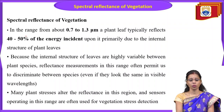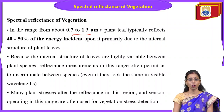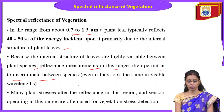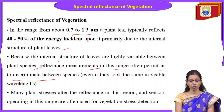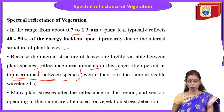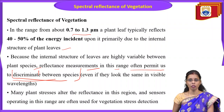In the range from about 0.7 to 1.3 micrometers, a plant leaf typically reflects 40 to 50 percent of incident energy, primarily due to the internal structure of plant leaves. Because the internal structure is highly variable between plant species, reflectance measurements in this range often permit us to discriminate between species even when they look the same in visible wavelengths. Many plant stresses alter reflectance in this region, and sensors operating here are often used for vegetation stress detection.